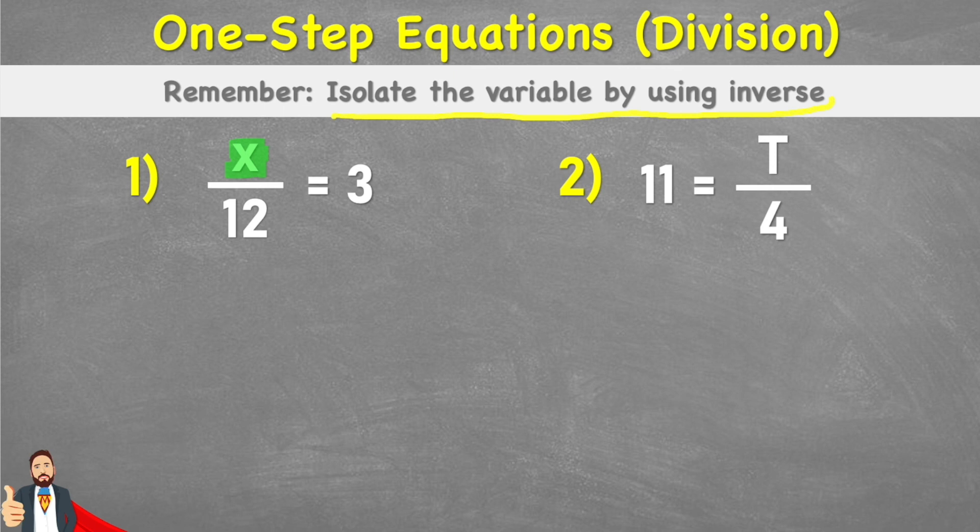But as we can see with this first one, which reads x divided by 12 equals 3, the x is connected to this divide by 12. So if we want to get this x on its own, we need to get rid of this divide by 12. And the only way to get rid of this divide by 12 is to use the inverse to cancel it out.